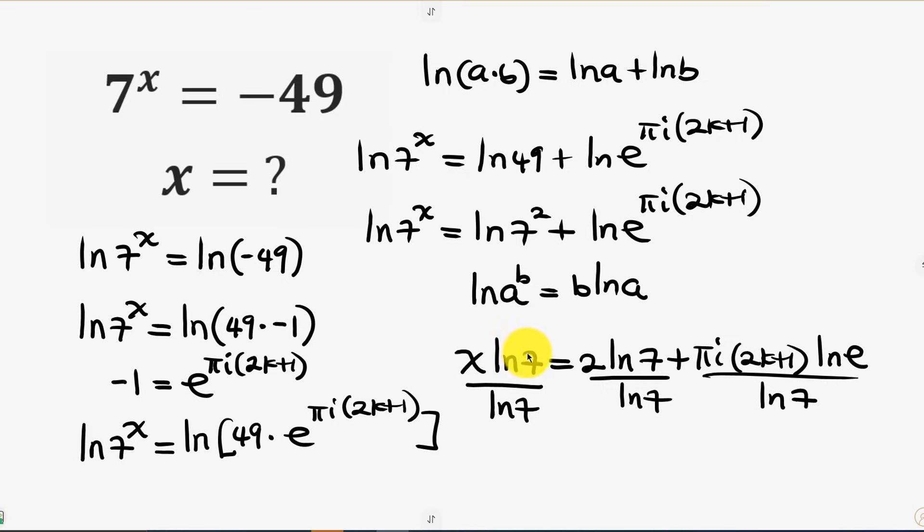Now notice that ln of 7 cancels out from here, leaving x equal to 2 plus—now we have ln of e which is the same as 1, so 1 times this expression gives the same thing. So we have pi i times (2k + 1) all over ln of 7. And this is our final solution.